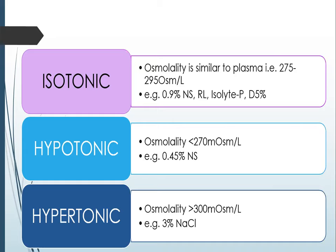Hypotonic fluids such as 0.45% NS have an osmolality of less than 270 milliosmol per litre, and hypertonic fluids have an osmolality of more than 300 milliosmol per litre, as in the case of 3% NaCl.